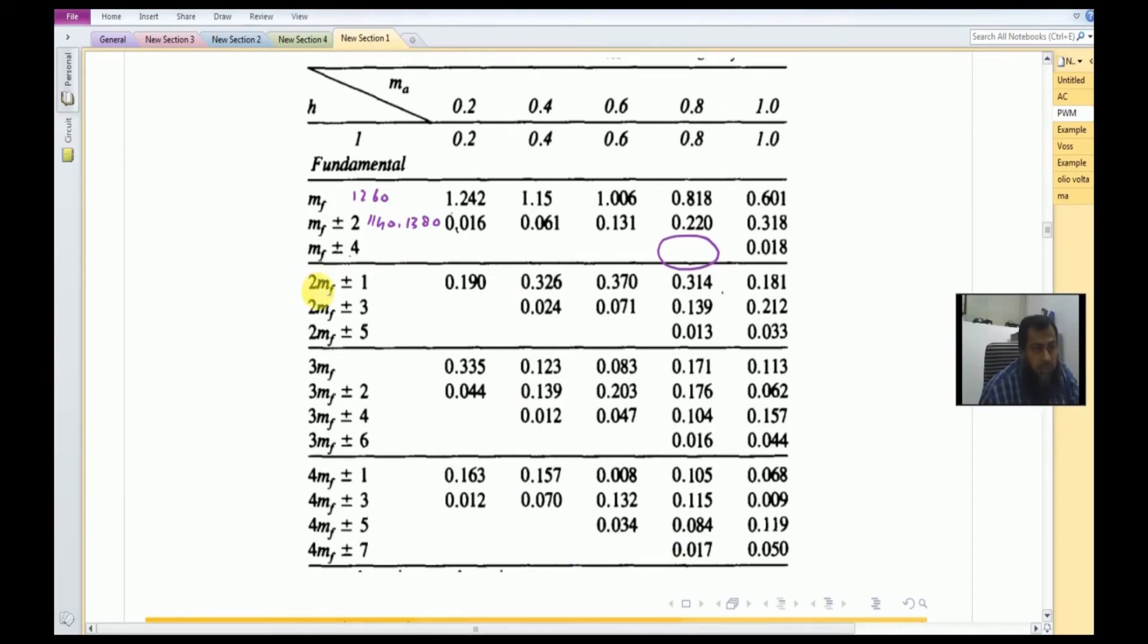If we see this particular table, the next harmonic that should appear is three components: 2MF plus minus 1, 2MF plus minus 3, and 2MF plus minus 5. So 2MF means 2 times 21 plus 1 and 2 times 21 minus 1. That is equal to 42 minus 1, which is 41, and this is 43 and this should be equal to 41.